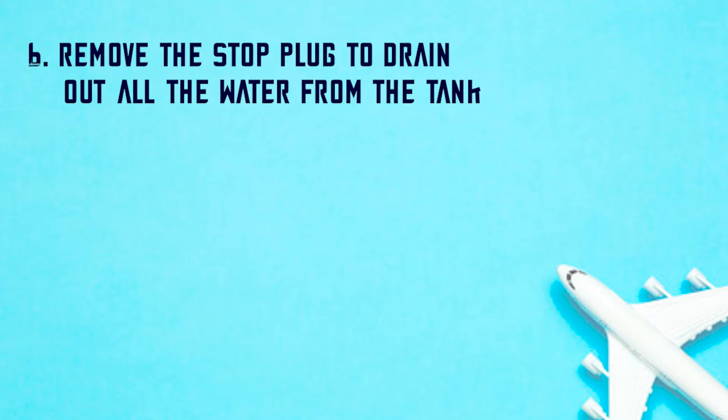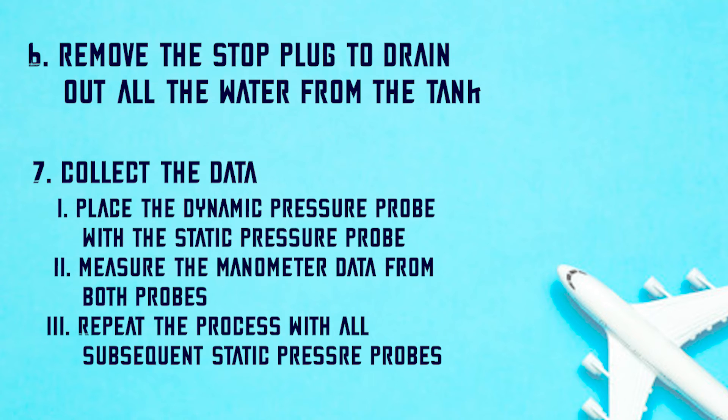After that is done, remove the stop plug and drain out all the water pressure from the tank and the data can be collected. This is done by placing the dynamic pressure probe with the static pressure probes and measure the manometer data from both probes and repeat the process for all the subsequent static pressure probes.